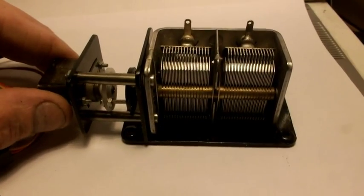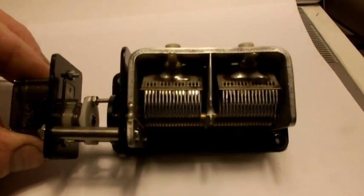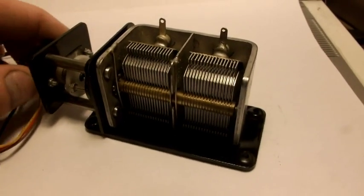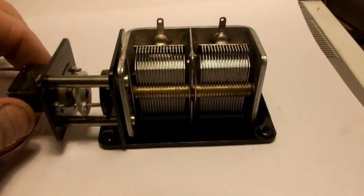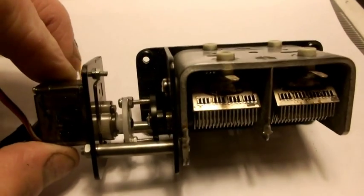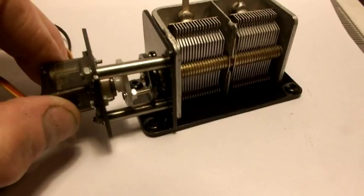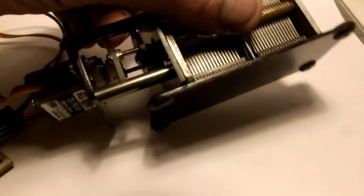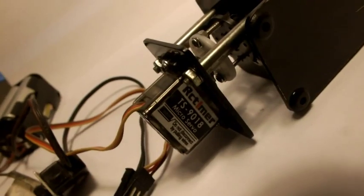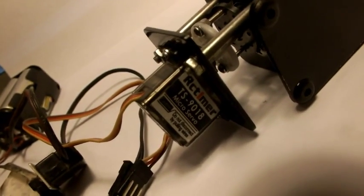So what I've done here is I've taken a standard vintage dual gang 500 puff per section capacitor and simply added on a cheap radio controlled servo motor which cost I think about £2.